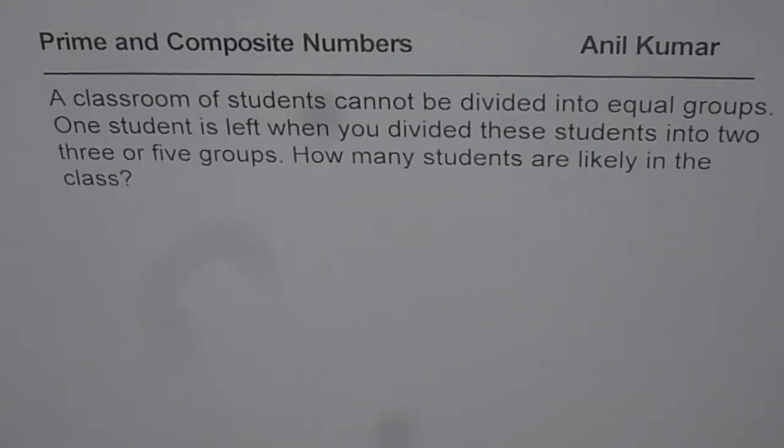A classroom of students cannot be divided into equal groups. So probably we have a prime number of students. One student is left when you divide these students into two, three or five groups. How many students are likely in the class?